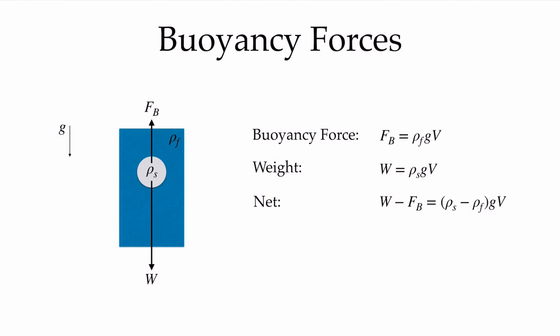First, let's think about buoyancy forces. We imagine a particle of density rho_s inside a fluid of density rho_f with gravity acting downward. The particle will have a weight, which is its density times the acceleration due to gravity times its volume. And there will be a buoyancy force acting in the opposite direction, which is the density of the fluid times g times the volume. So the net force acting on this particle is the weight minus the buoyancy force: (rho_s - rho_f) times g times V.